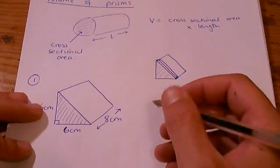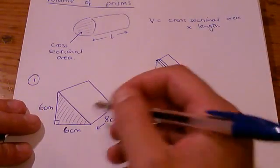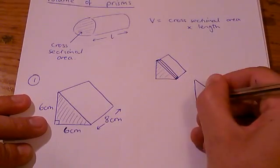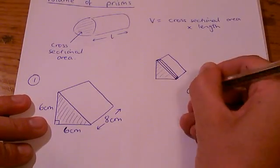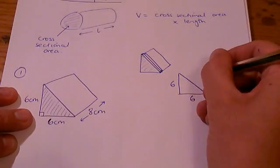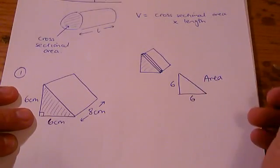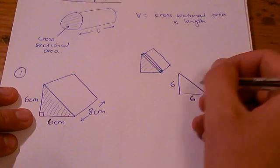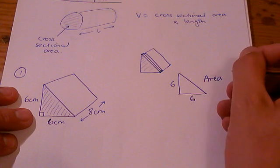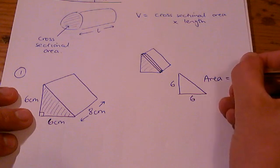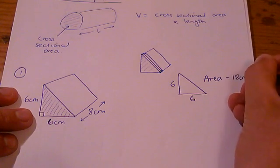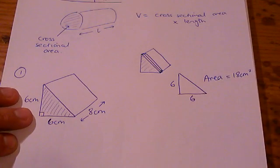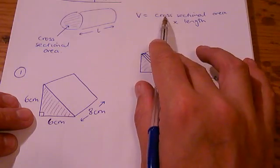Let's look at how we work out the volume of this. We need to do the cross-sectional area multiplied by the length. The cross-sectional area in this case is a triangle, so I'm just going to draw that out here and work out its area. Remember the area of a triangle is half of the base times the height, so that is 6 times 6, which is 36, and then half it: 18 centimeters squared.